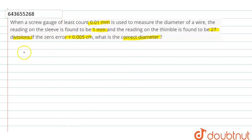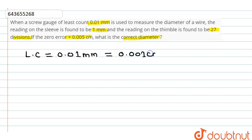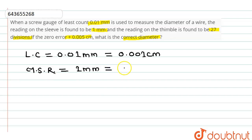According to the question, the value of least count of the screw gauge is 0.01 mm, which can also be written as 0.001 centimeter. Similarly, the value of MSR, that is main scale reading, is 1 mm, which can also be written as 0.1 centimeter.